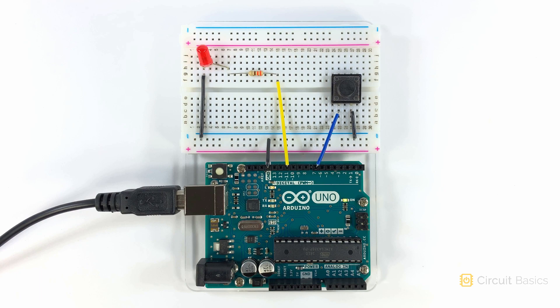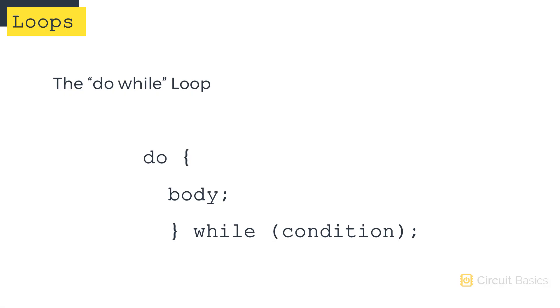Now let's take a look at another type of loop, the do-while loop. Do-while loops work the same way that while loops do. But in do-while loops, the body code is executed before the test for the condition occurs.